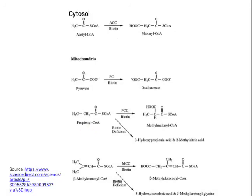Methylmalonyl-CoA is then converted into succinyl-CoA, which joins the TCA cycle and is catabolized. Methylmalonyl-CoA concentration rises in vitamin B12 deficiency, so studying the propionic acid pathway will help you understand this context. The fourth reaction: methyl crotonyl-CoA, an intermediate in leucine metabolism, is converted into beta-methyl crotonyl-CoA by the biotin-dependent enzyme methyl crotonyl-CoA carboxylase.